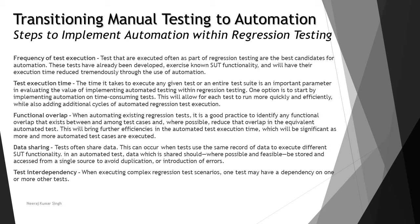Test interdependency is another consideration. When executing complex regression test scenarios, one test may have a dependency on one or more other tests. We need to recognize this so that the automation framework or regression suite has a calling function to pick up tests that need to run in sequence. The automation framework should be created to automatically pick up the respective tests using data-driven or keyword-driven frameworks.